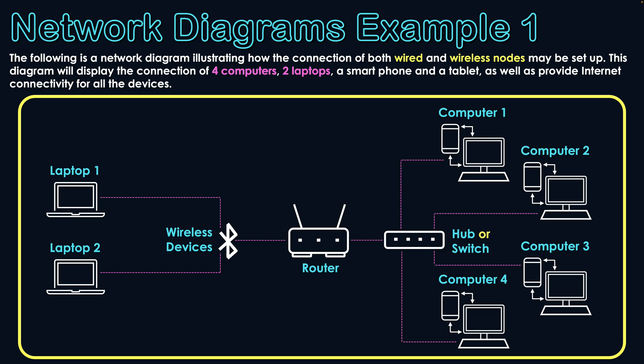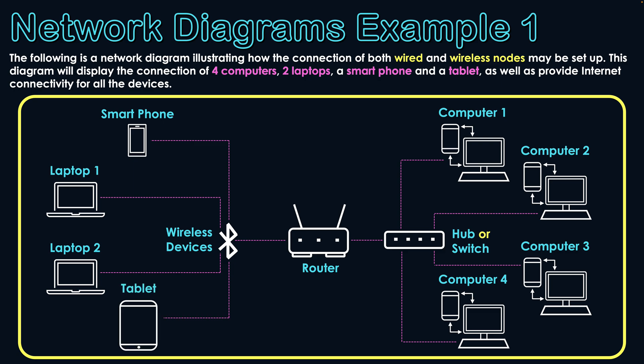The same applies to the smartphone. Smartphones can connect to their own networks via network providers, but when at home you want them connecting to the home Wi-Fi. They will also wirelessly connect to the router — and the same scenario applies to the tablet, which will also have a wireless connection to the router.